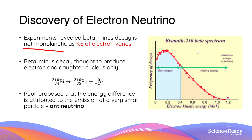This discrepancy is shown in the graph on the right-hand side. The red line shows the distribution of energy levels of electrons emitted from the beta decay of bismuth-210. Physicists noticed that no matter what the electron's energy was, there was always a missing amount of energy not accounted for by the kinetic energy of the electron alone.